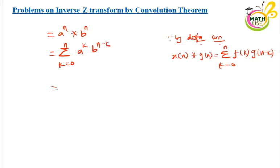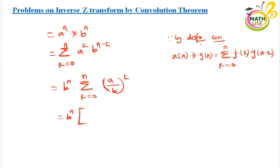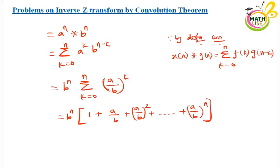We can take b to the power n outside the summation since it is a constant. Then we get b to the power n times summation k equal to 0 to n of a divided by b, the whole raised to the power k. Substituting k equal to 0, 1, 2, 3, and so on up to n, the series becomes: 1 plus a over b plus a over b squared plus and so on up to a over b to the power n. This is a finite series, which can be expressed as a over b to the power n plus 1 minus 1, divided by a over b minus 1.